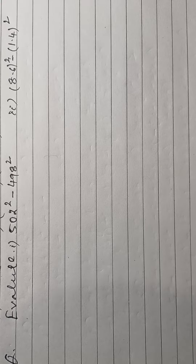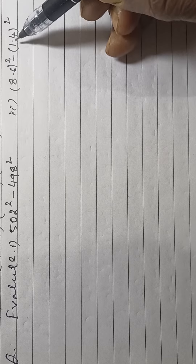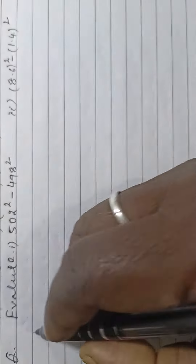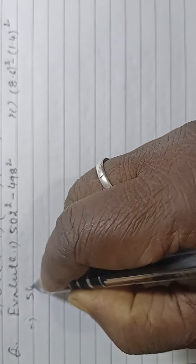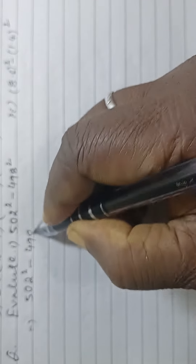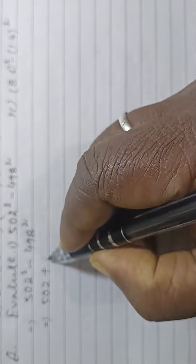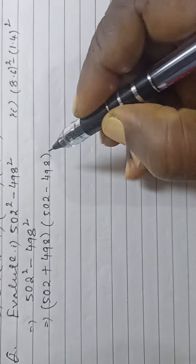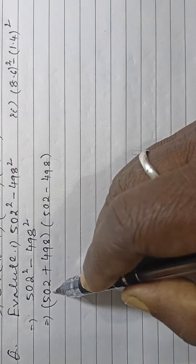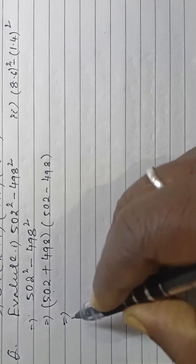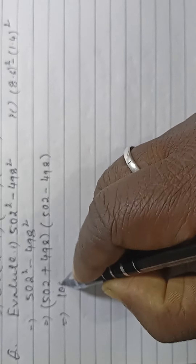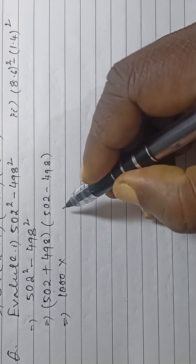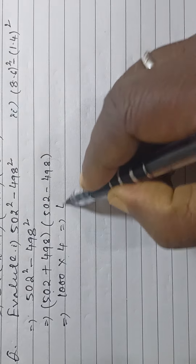Evaluate 502 square minus 498 square and 8.6 square minus 1.4 square. For the first part, 502 square minus 498 square equals (502 + 498) into (502 - 498), as per the identity a square minus b square equals (a + b) into (a - b). The sum is 1000 and the difference is 4, so the answer is 4000.